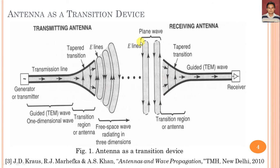Similarly, in a receiving antenna, these electric field lines — we can say they are plane waves — are impinged on the receiving antenna structure. This taper transition is considered the transition region or the antenna. The guided TEM waves will be generated when the electromagnetic waves impinge on the receiving antenna, and with some specific processing units, we can receive at the receiver. This is the basic mechanism of the antenna — through the process of the transmitting antenna to the receiving antenna, creating electric and magnetic fields, the antenna acts as a transition device.